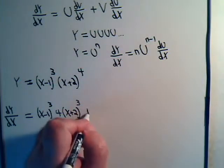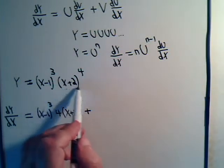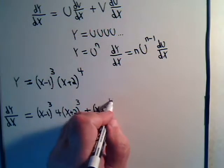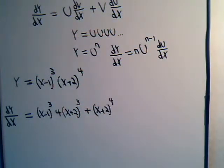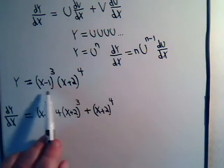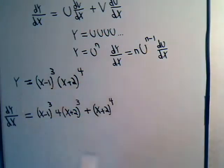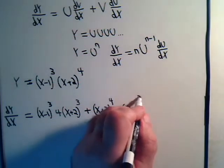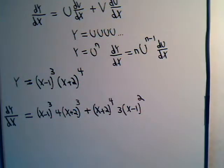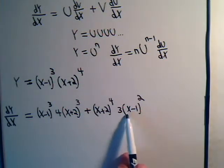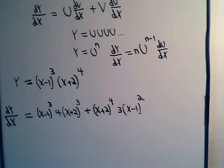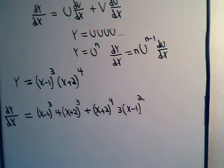Then we have plus the second function, and now it has to be multiplied by the derivative of the first function. So we bring the three down, times x minus one squared, times the derivative of what's inside of here — again, that's just going to be one. So right here, the calculus part of the problem is over.